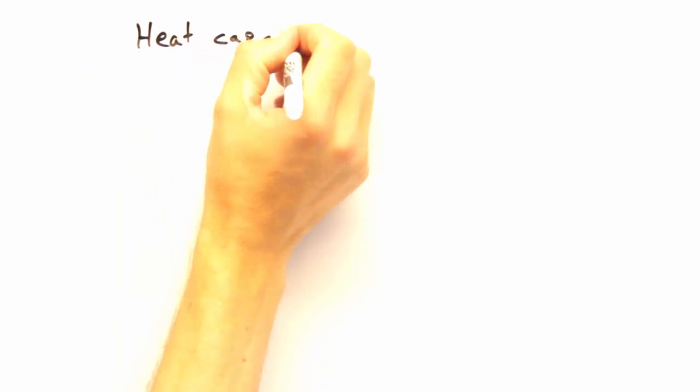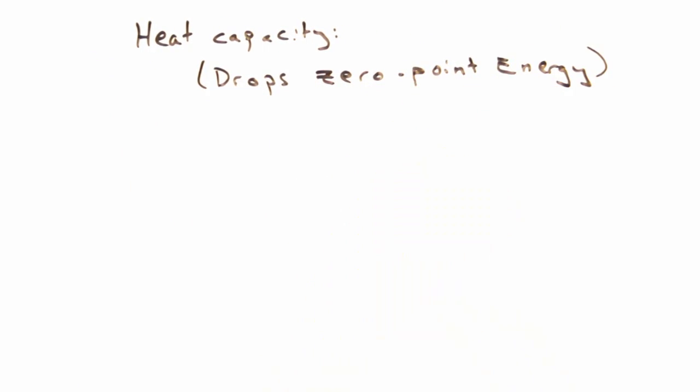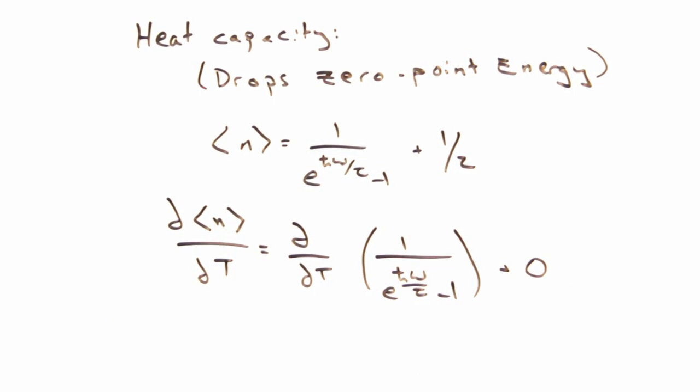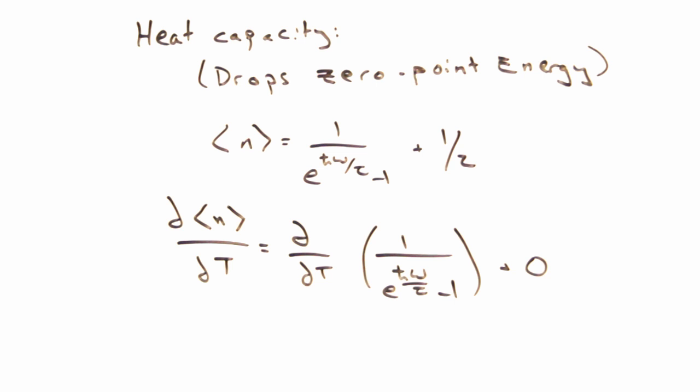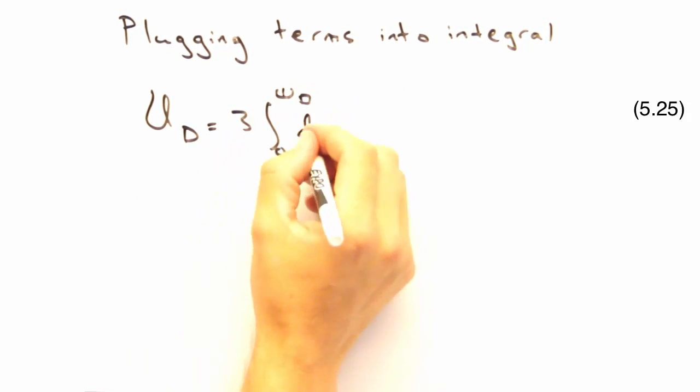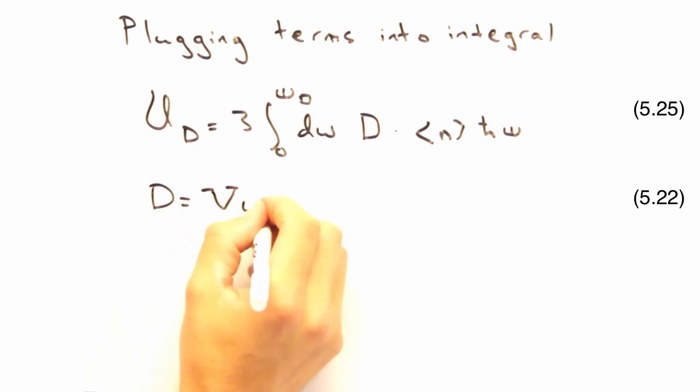Sounding good so far. Looks like you dropped the zero point energy because you know it's going to go away in the temperature derivative. Since the only term that depends on temperature is the Planck distribution, we can pull everything else out of the integral. Since we know what the density of states is in 3D, we're just about ready to crank out this integral.